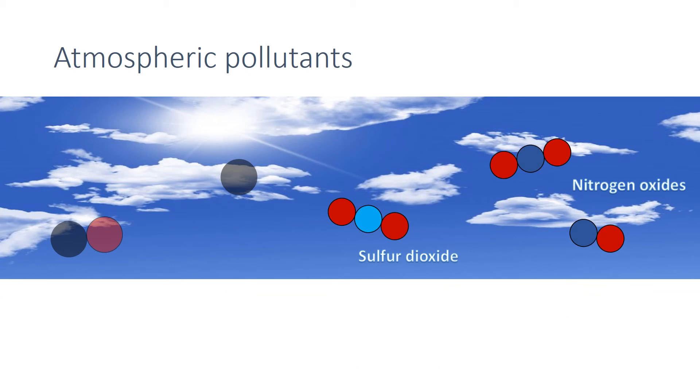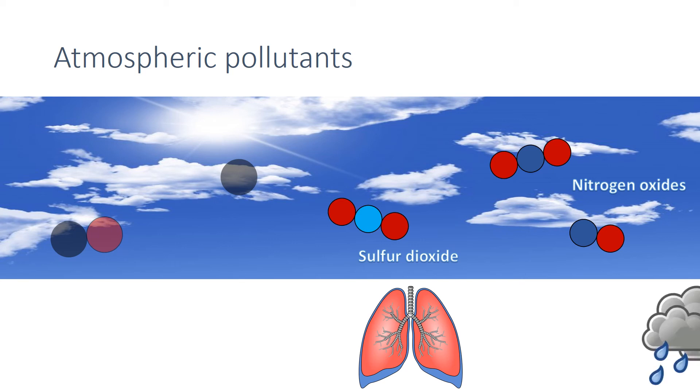Sulfur dioxide and oxides of nitrogen can cause respiratory problems in humans. They can also dissolve in water to form acids that go on to produce acid rain.